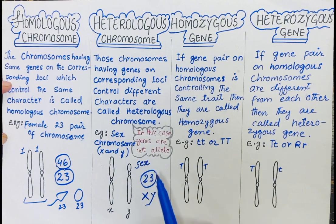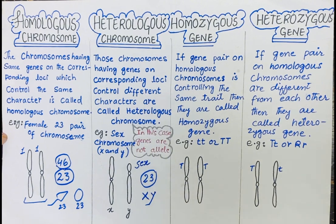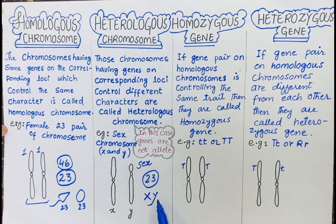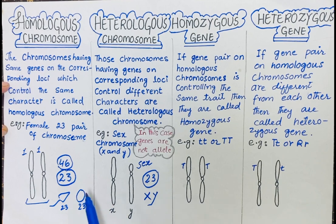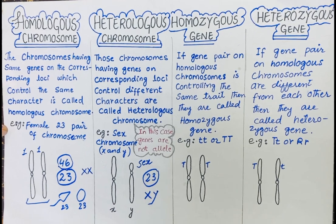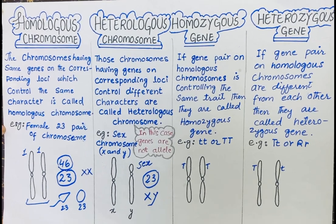Why? Because this chromosome is the 23rd pair, and it decides whether this human is male or female. If the individual is male, then this chromosome is called X and Y — the 23rd pair is called XY. If it is female, it is called XX. In females the sex chromosomes are XX and in males the sex chromosomes are XY.